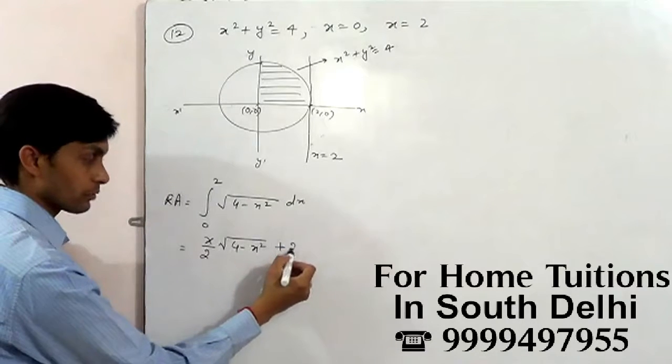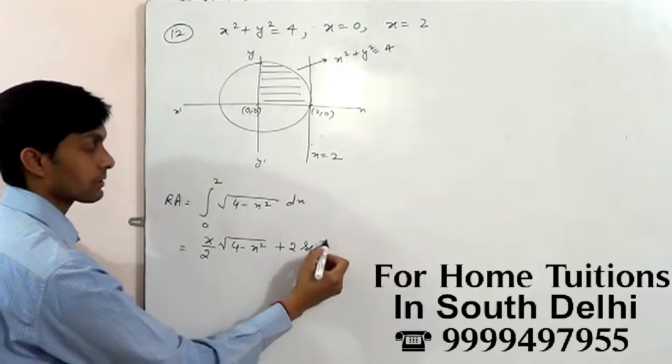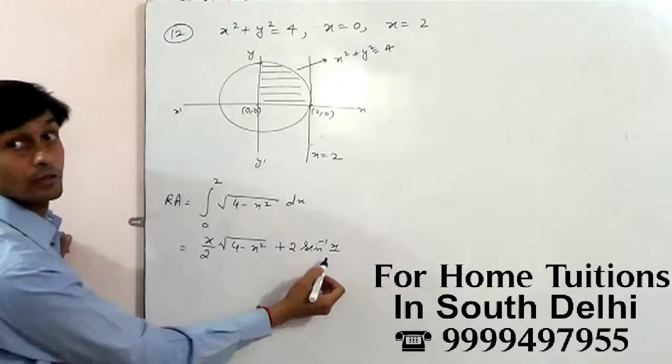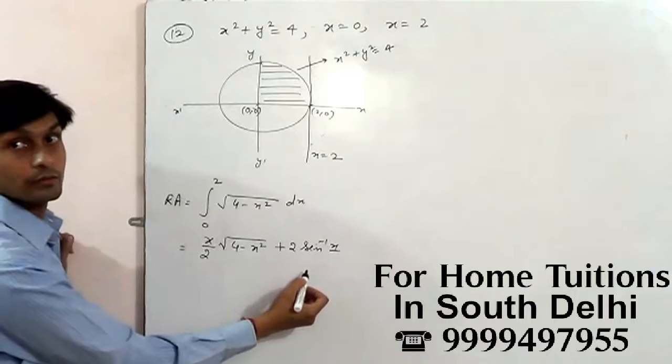4 by 2, we get 2, sine inverse x upon 2, from 0 to 2.